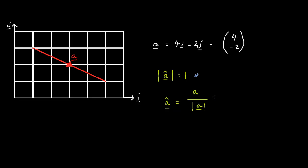We're dealing with the vector a here, and the vector a is 4i minus 2j. We'll put this over here, leave the division sign here, and find the magnitude of the vector a.